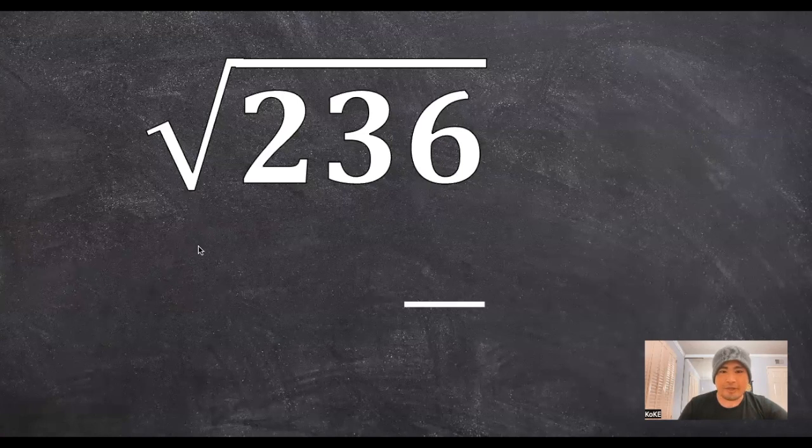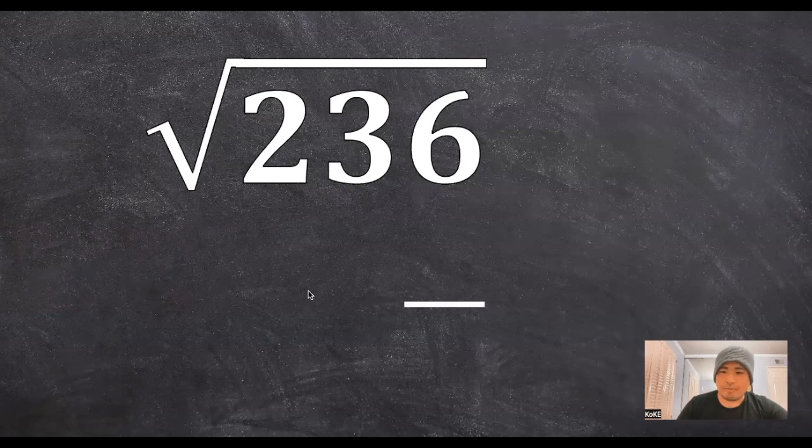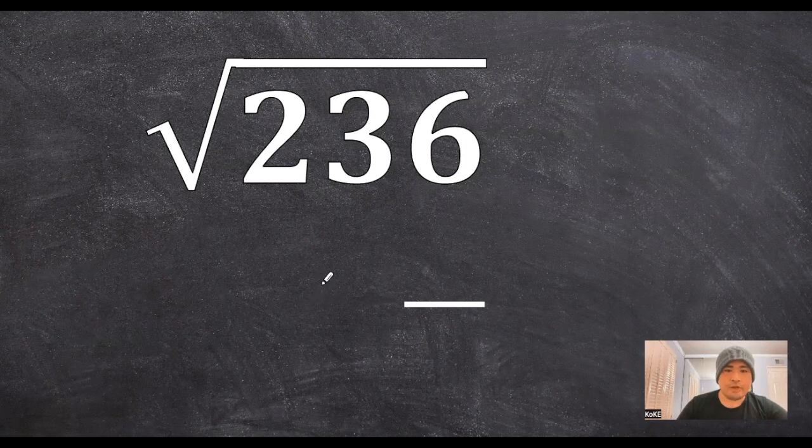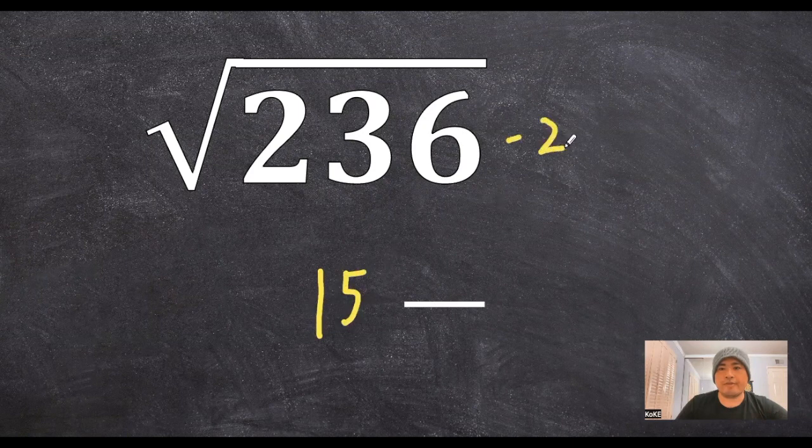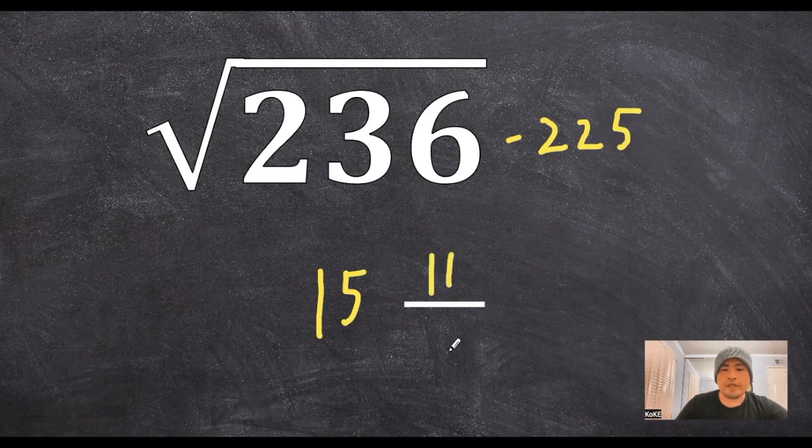All right, guys, last example here. So 236. If we know our perfect squares up to 20, we know that 15 squared gives us 225. So if we take the difference between the two numbers here, our numerator becomes 11, and then double the 15 to get 30.